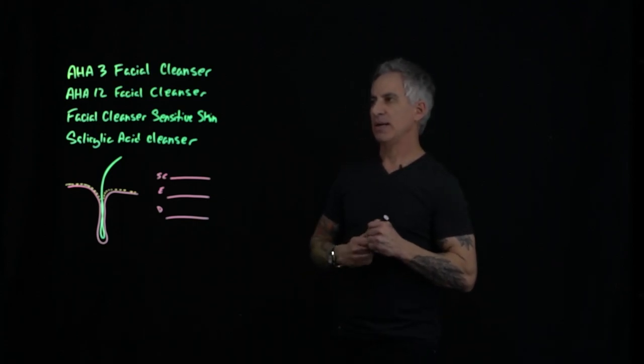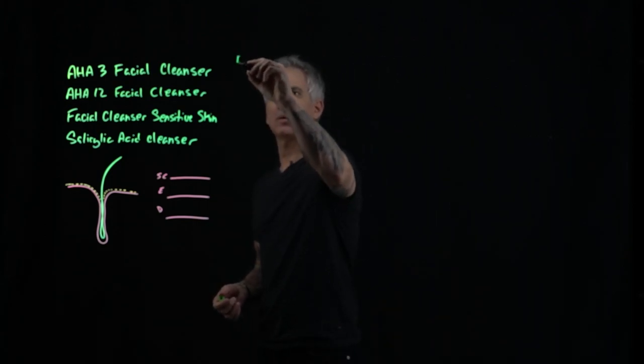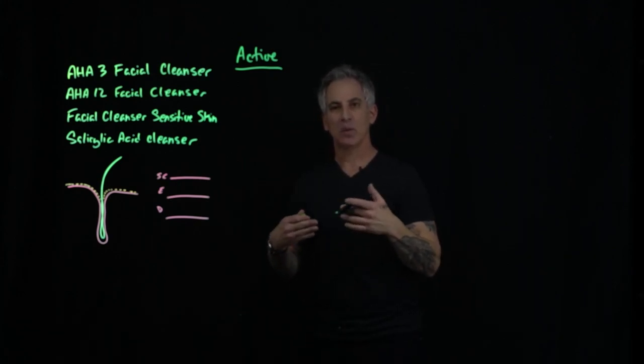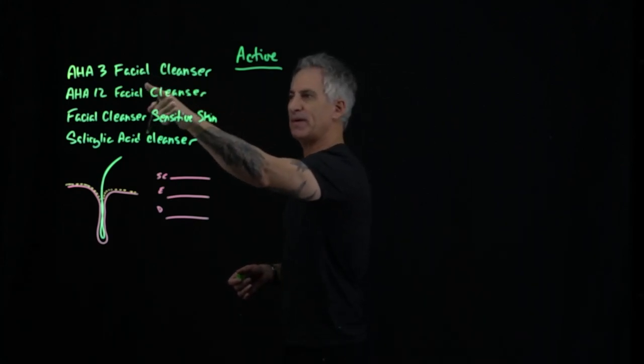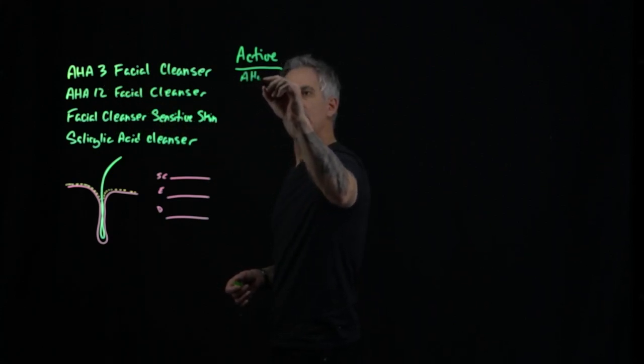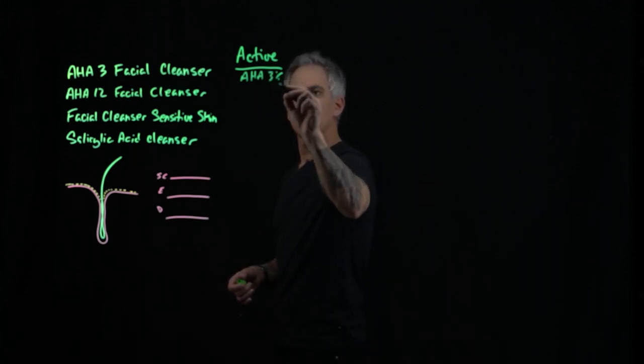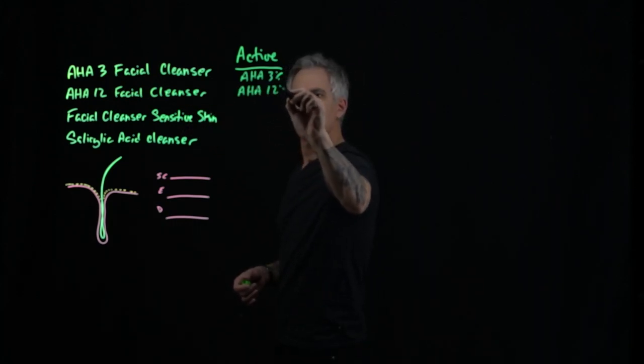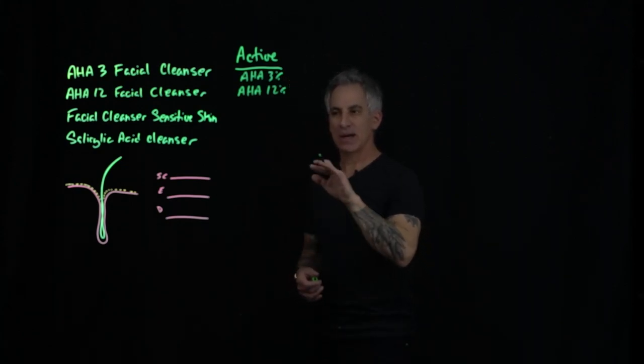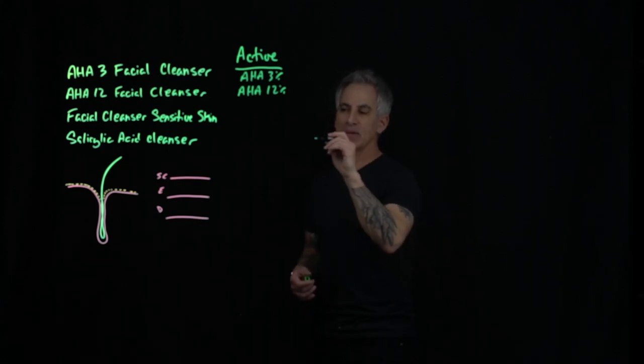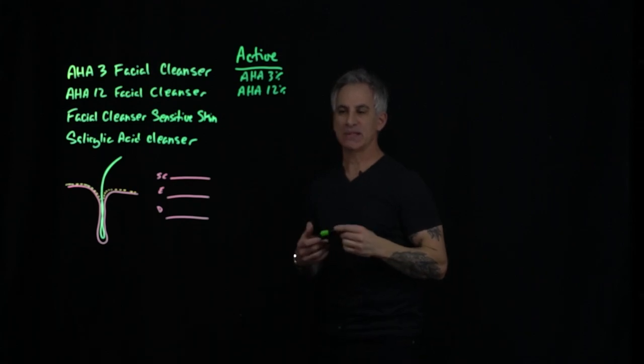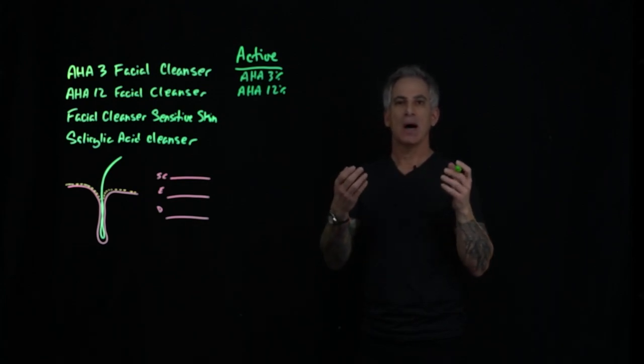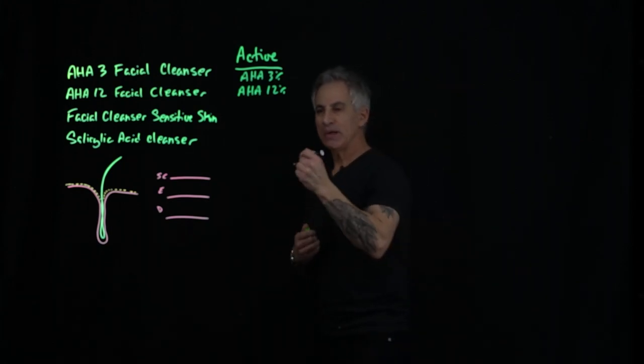The AHA-3 facial cleanser, the active ingredient, and that's what's important when you're looking at any product, any cleanser whatsoever, is what is the active ingredient and what is it doing? Well, the active ingredient in AHA-3 facial cleanser is AHA, or glycolic acid, at 3%. Going further down, we have AHA-12. That's going to be the same, AHA at 12%. Facial cleanser sensitive skin does not have any glycolic acid in it whatsoever. And the reason for a facial cleanser sensitive skin, and the reason why I put the word sensitive skin, is just to alert the professional and or you as the user that you're not using a cleanser with an active ingredient other than soap. So I'm going to go ahead and write soap here.